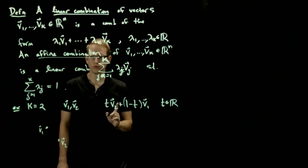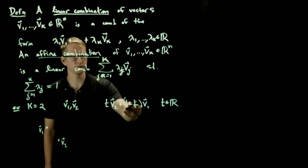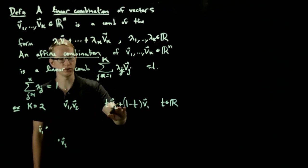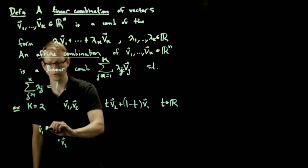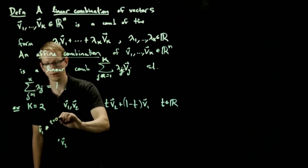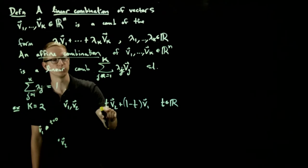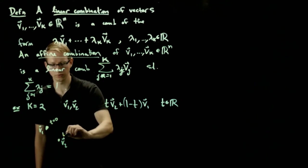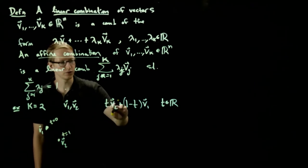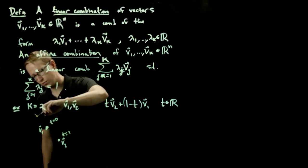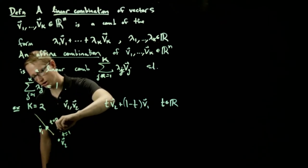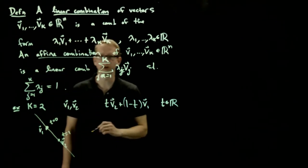Then at t equals 0, so this is describing the set of all such combinations. And when t equals 0, this gives me v1. So at t equals 0, I'm here. And when t equals 1, I'm at v2. And as you vary t over the set of real numbers, you get all the points along the straight line through v1 and v2.